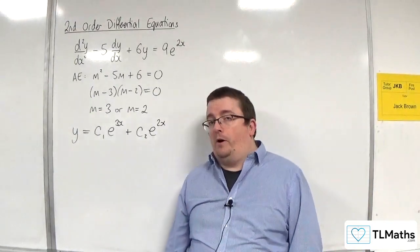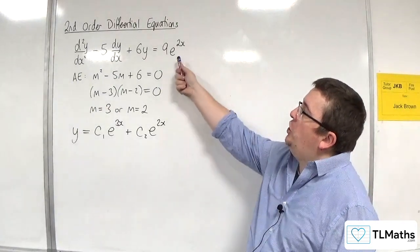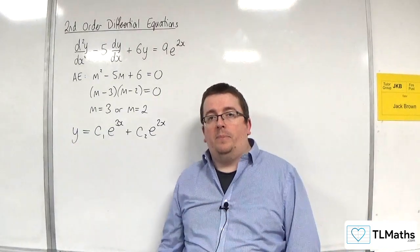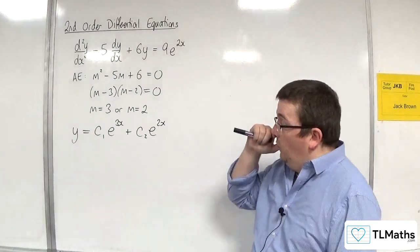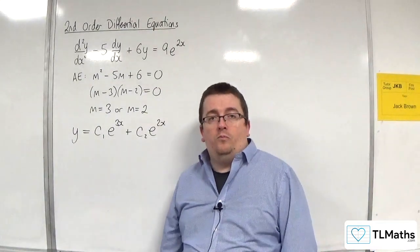Now what you need to spot is that the right-hand side function is actually a multiple of one of our pieces of the complementary function solution, and that causes a little bit of a problem. So let's see what problem it causes.